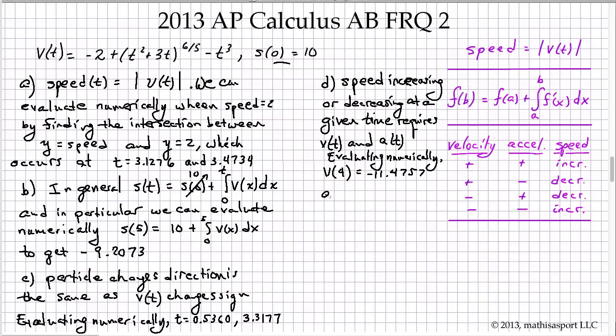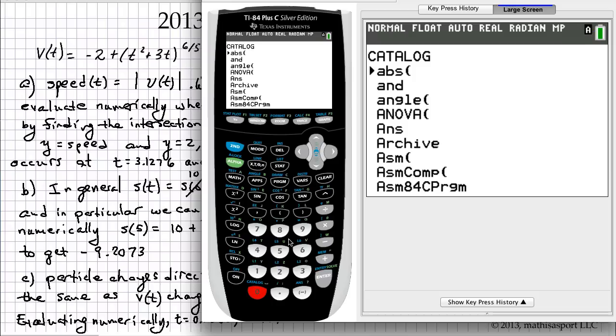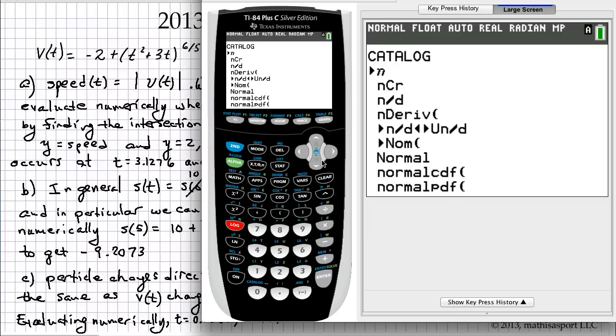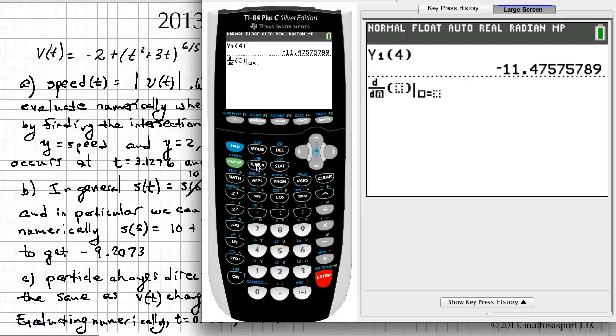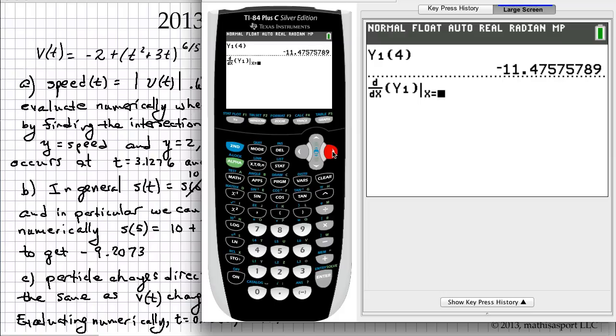You can see clearly that's negative. Let's also find A of 4, which is equal to V prime of 4. So we'll use nDeriv. Find it from the catalog. Jump down to N and scroll down to nDeriv. We're taking all these functions in terms of X, so we're taking a derivative with respect to X. We want Y1 here. And the time is when T equals 4. Negative 22.2957.